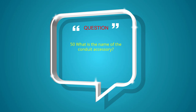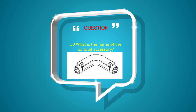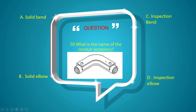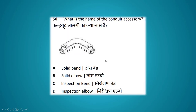What is the name of the conduit accessory shown? Options: solid bend, solid elbow, inspection bend, inspection elbow. The answer is inspection bend.